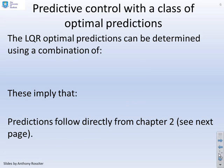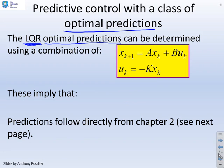Predictive control with a class of optimal predictions. The linear quadratic regulator using that as a base to give us the optimal predictions. Then what we've got is a combination of your model, x equals Ax plus Bu, and an optimal feedback, u equals minus Kx. That will give you the global optimal behavior in the case that the target is zero.